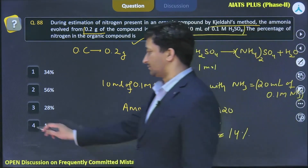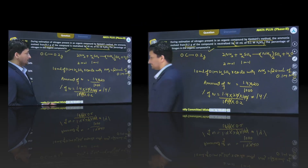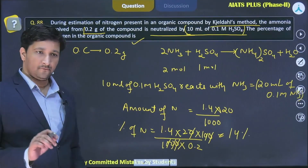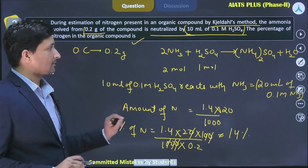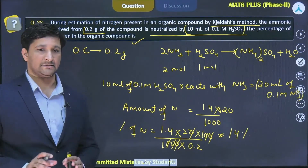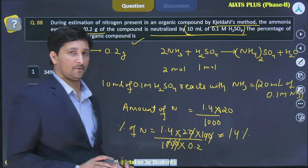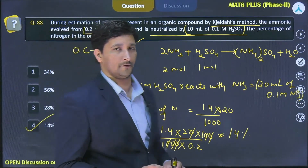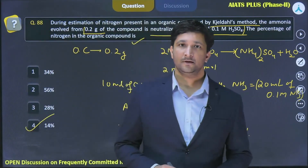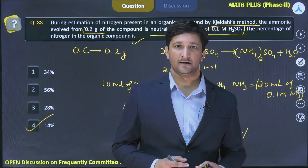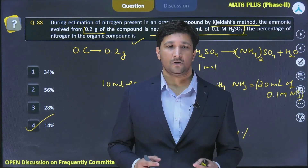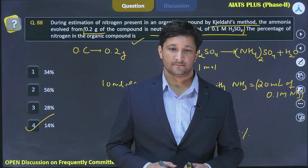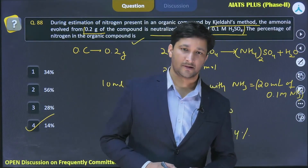So, 14 percent is your correct answer. You have to follow the unitary method for the proper estimation and solving of such questions, whether it is for the Kjeldahl method or for the Dumas method.